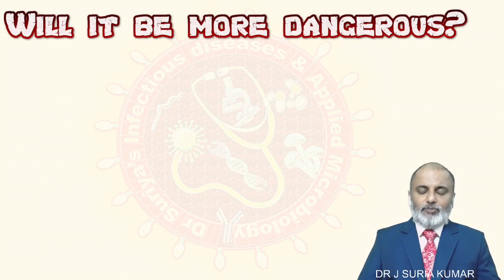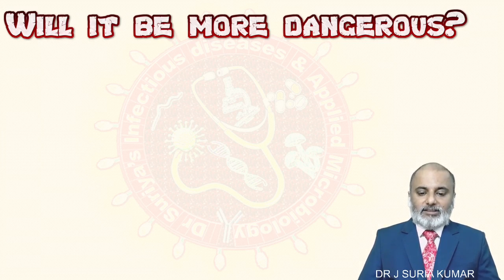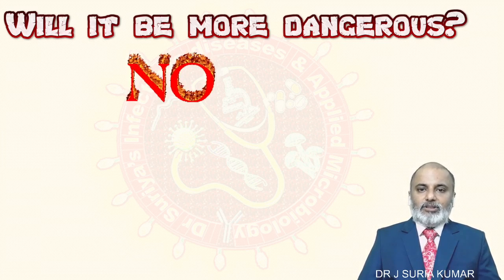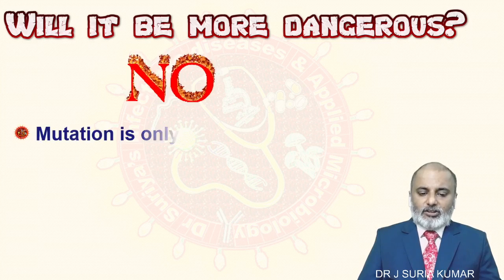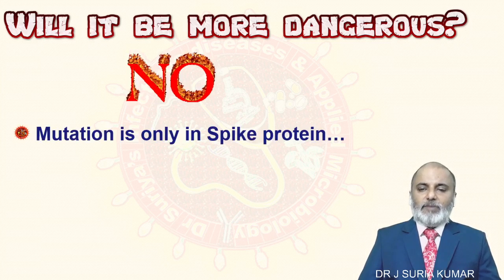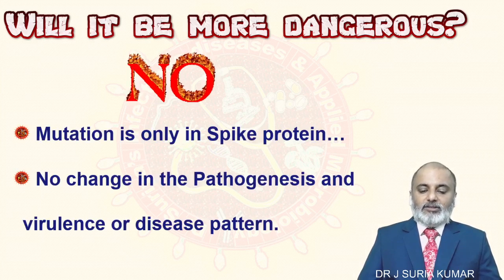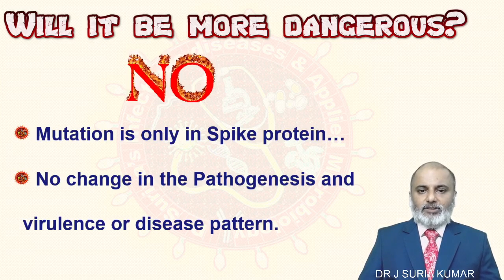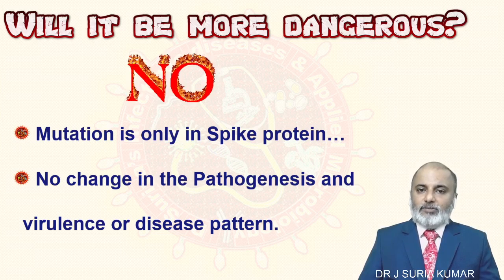Will it be more dangerous or deadlier? The answer is no. Because the major mutation happened on the spike protein, the virulence is not affected. The major mutation is only in the spike protein, so there is no change in pathogenesis, virulence, or disease pattern — at least with the currently available data. Only the number of cases will increase.